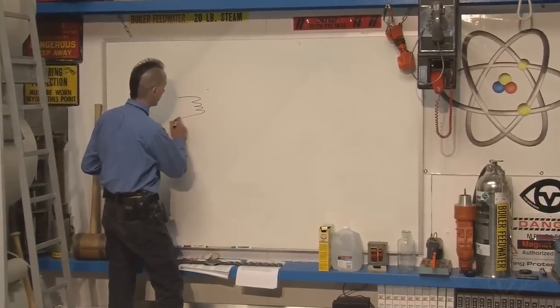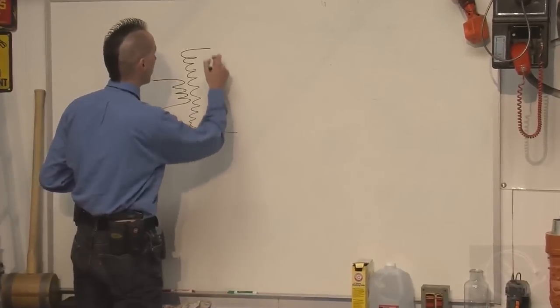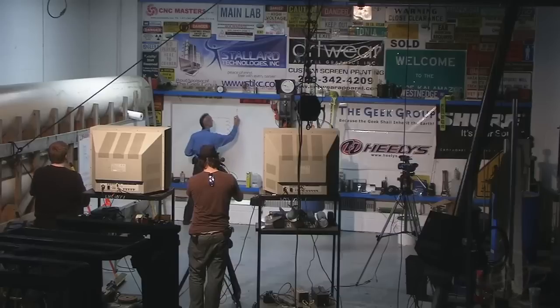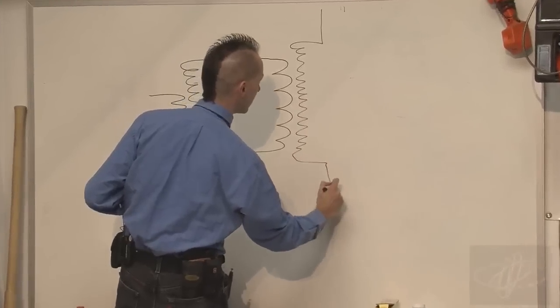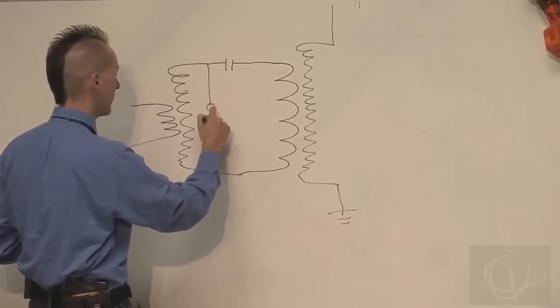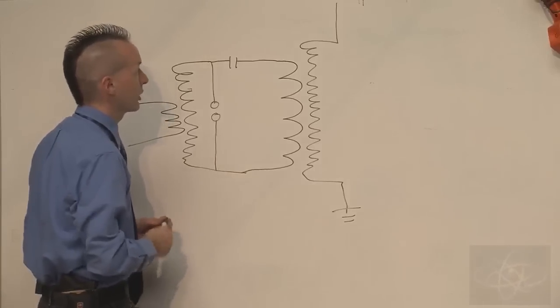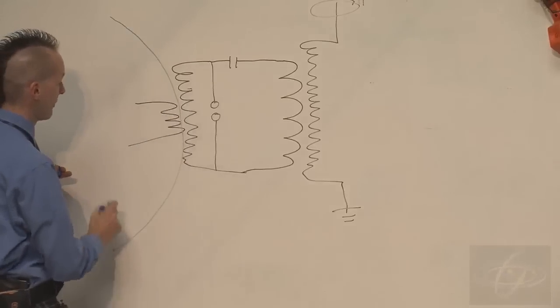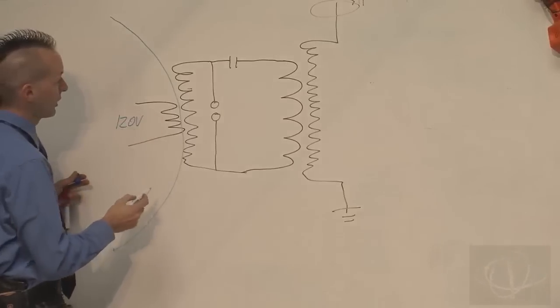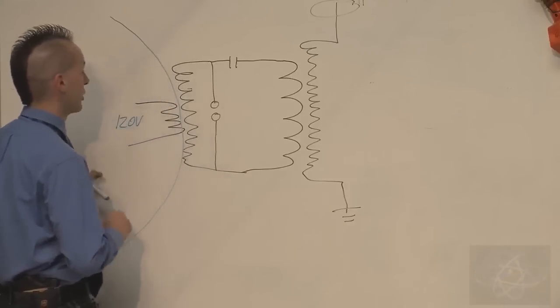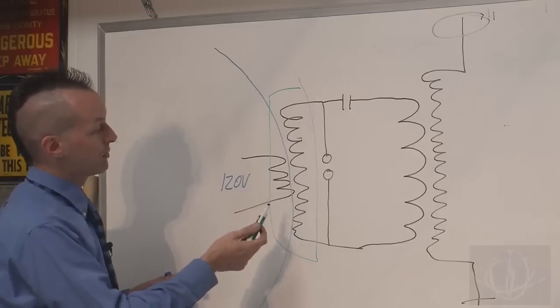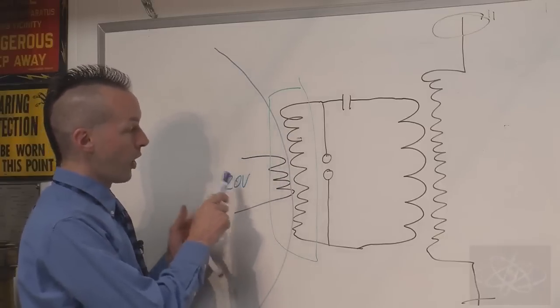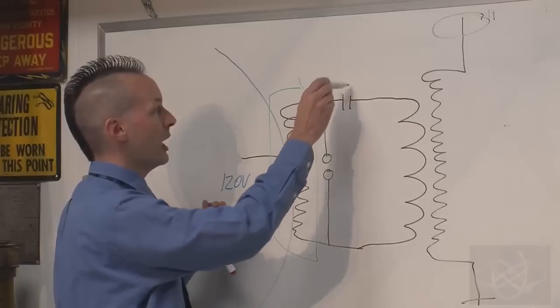Now here is our Tesla coil circuit. Now we have the low voltage side over here. And this is say 120 volts. Now this would be your neon sign transformer. This happy little box here. So you would have say 120 volts on your primary here. Secondary of 12 or 15,000 volts. And what this does is you're putting energy in here all the time. This energy is being used to charge your capacitor right here.